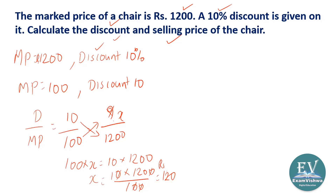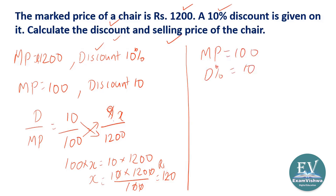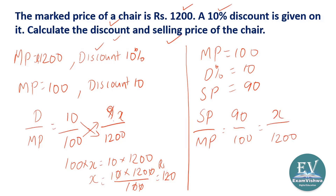Understood? This way you can find out the discount given for the chair, which has a market price of 1200 — the discount given is 120 rupees because the discount is 10 percent. There is another way of doing this as well.